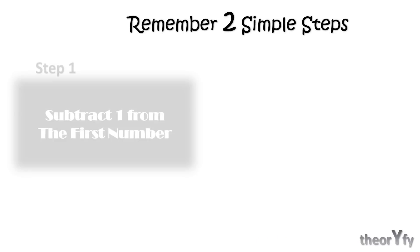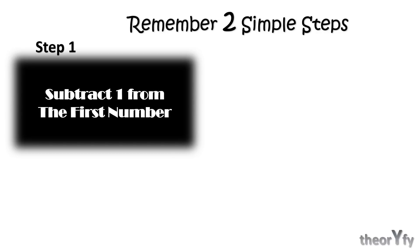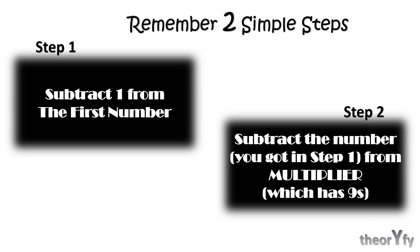So that was simple, I believe. So remember two simple steps: Step 1, subtract 1 from the first number, whatever the number is. And Step 2, subtract that answer which you just got in step 1 from the multiplier, the number with nines.